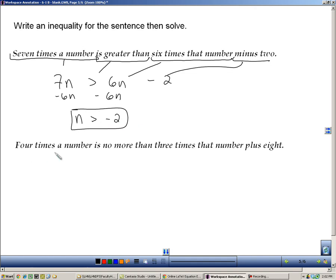Next one: 4 times a number. I'm going to use 4x this time—x or n doesn't matter. Is no more than—well, here's the key now, no more than. If it's not more than, it must be less than or equal to, because it's not more than, so it's got to be the other possibilities. Is no more than 3 times that number plus 8. Solving it, subtract 3x from both sides. You get x is less than or equal to 8.